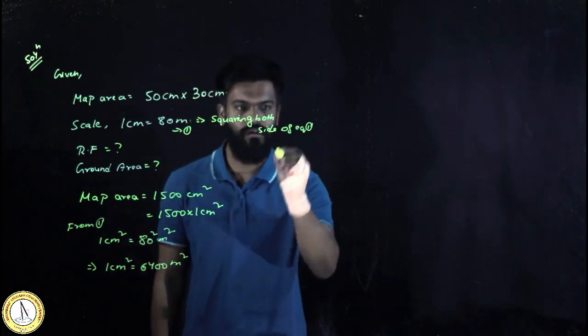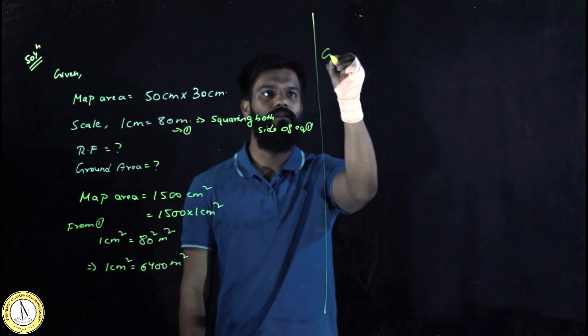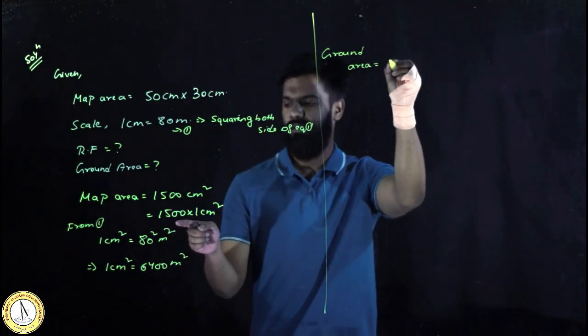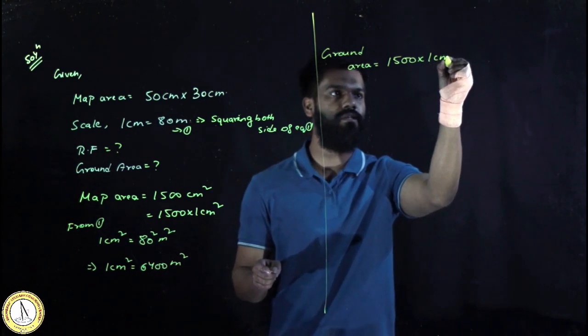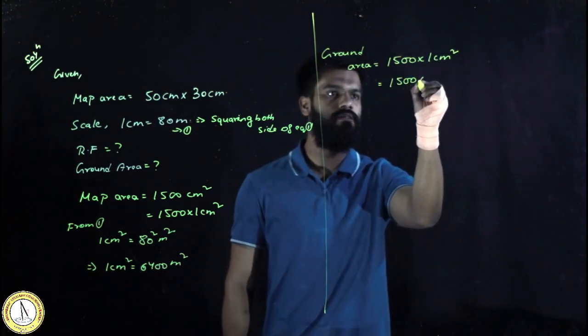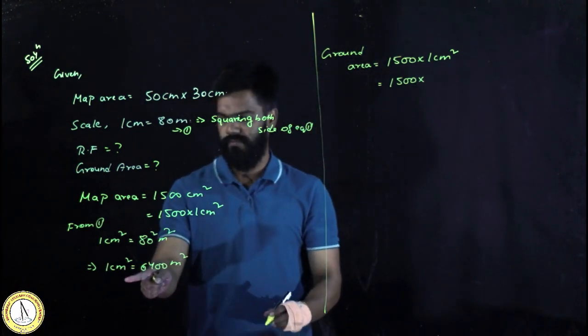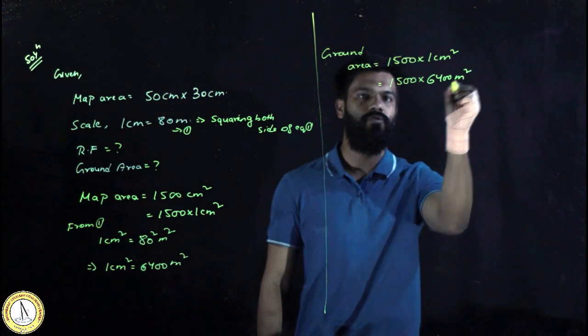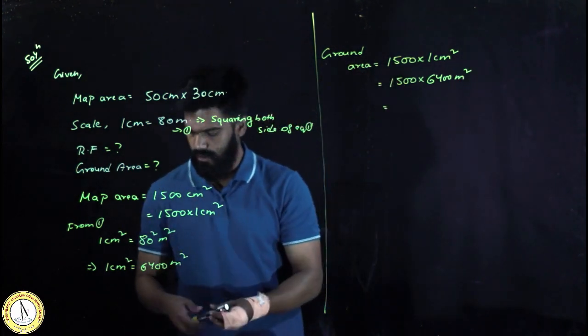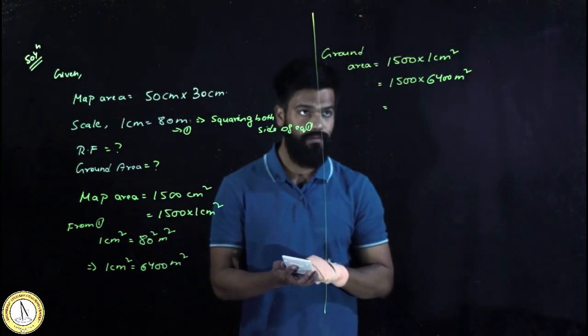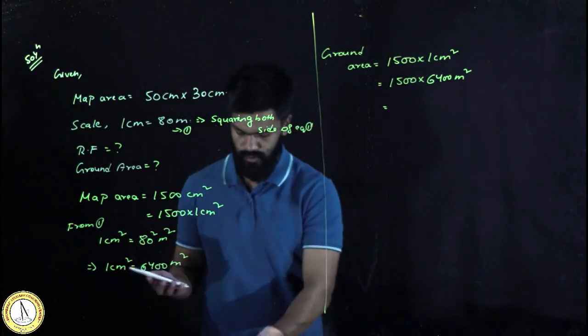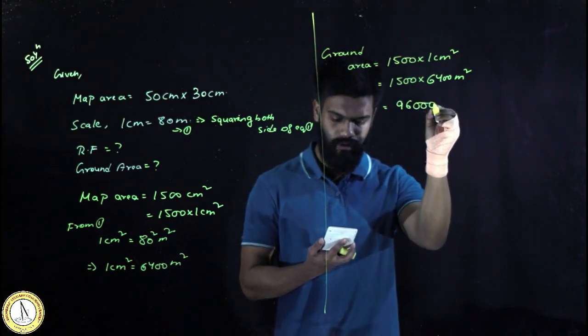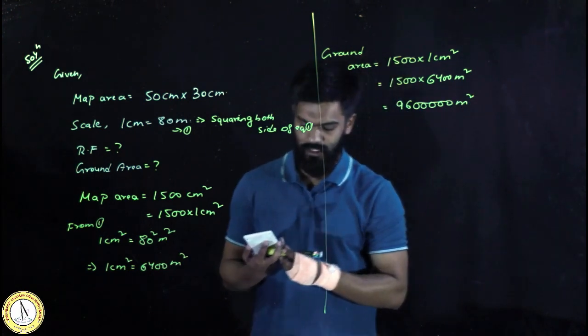Now I need to find out the ground area. Ground area will be equal to the map area, which is 1500 times 1 centimeter squared. Now I will replace this 1 centimeter squared from here. 1 centimeter squared equals 6400 meters squared. Using the calculator, 1500 multiplied by 6400 equals 9,600,000 meters squared. This is the area I have got.